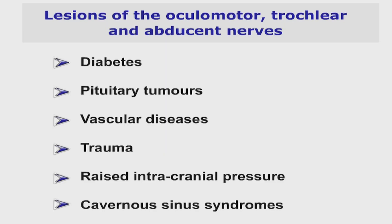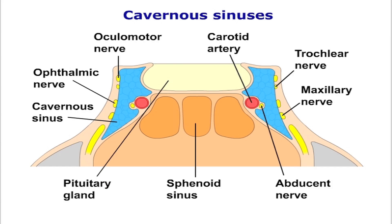Lesions of the oculomotor nerve may be seen in diabetes, with pituitary tumors, and in vascular diseases. Isolated lesions of the trochlear and abducent nerves, although uncommon, may sometimes be seen in diabetes, head trauma, and as a result of raised intracranial pressure. The third, fourth, and sixth cranial nerves can also be affected by cavernous sinus syndromes, such as tumors and carotid artery aneurysms.